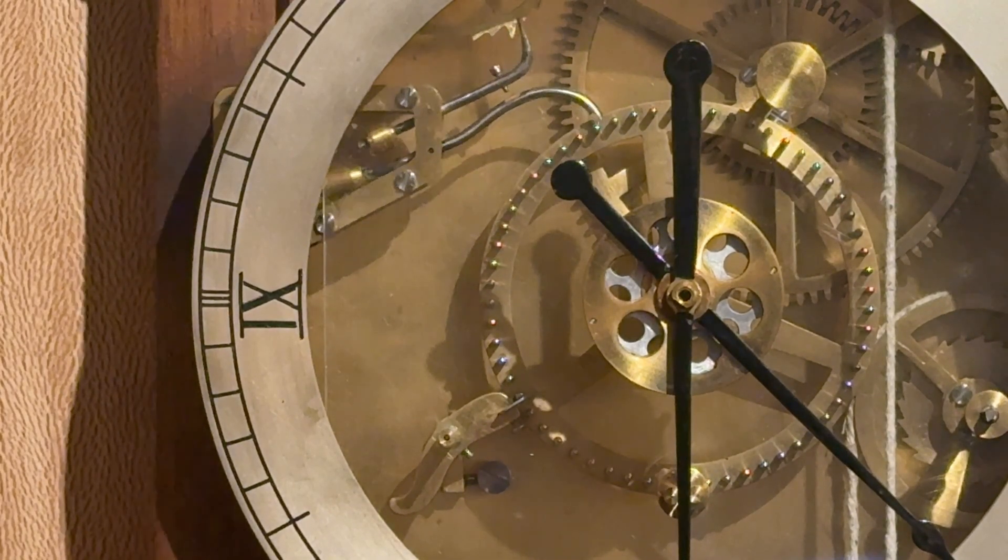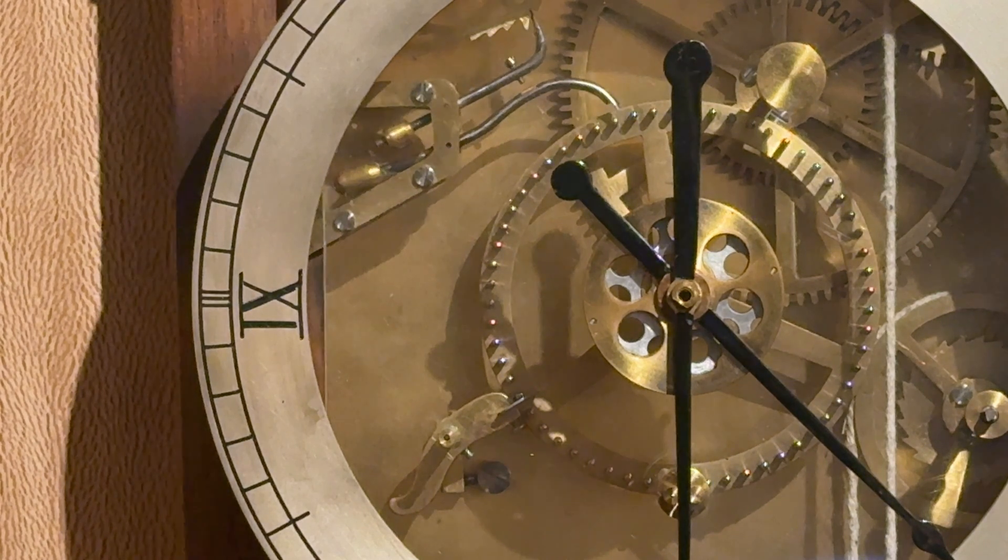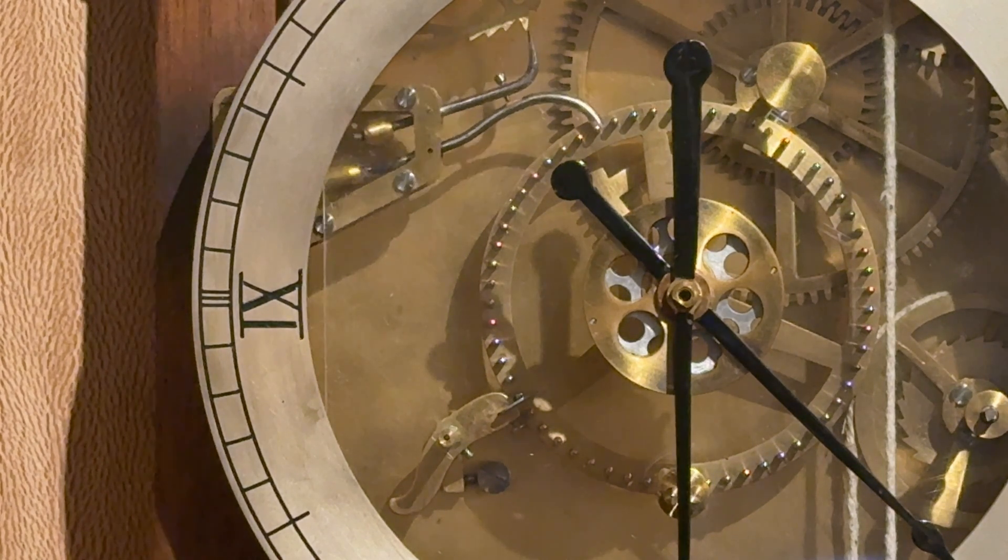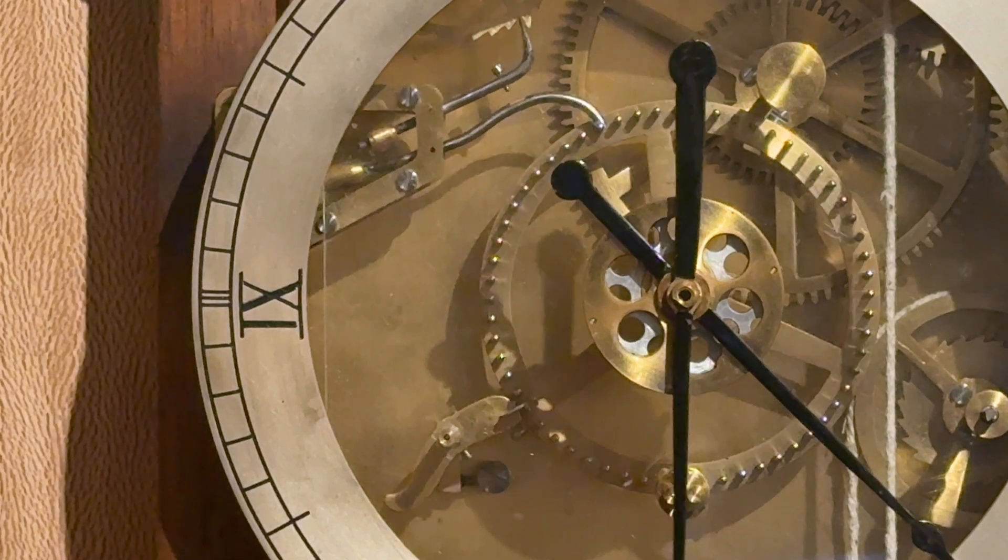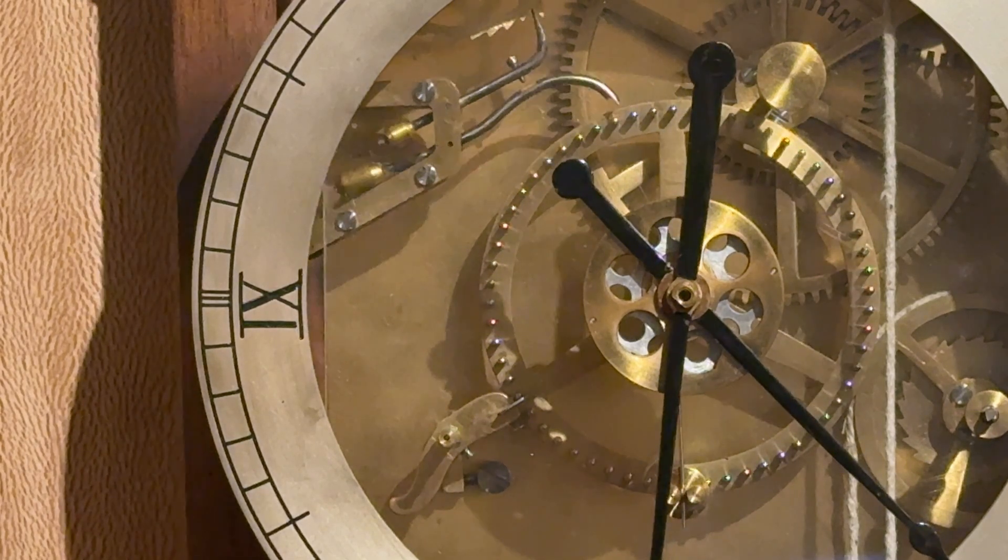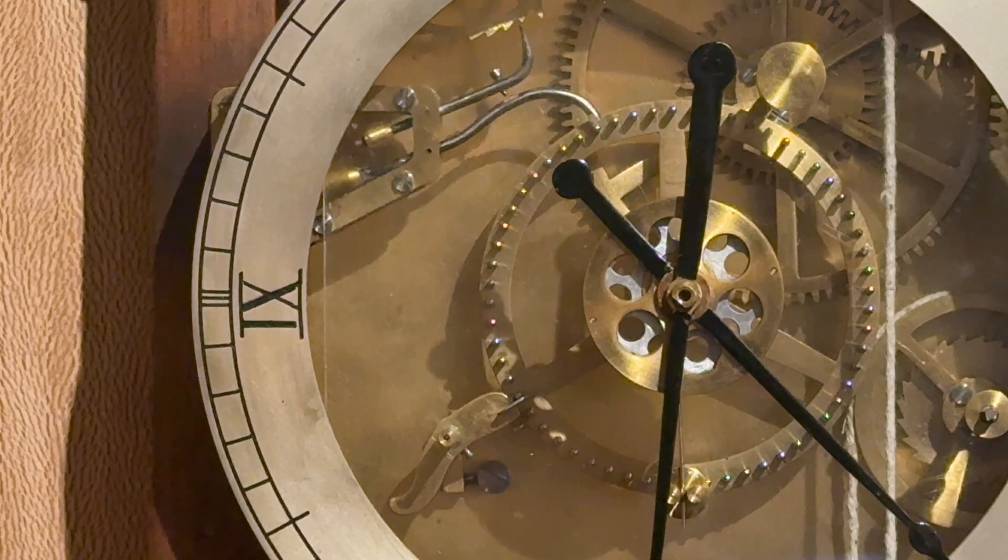So as the pendulum pulled back on the pinwheel, it unlocks the detente. And then when the pendulum moves forward again, the pendulum gets an impulse from the weight and the pinwheel moves on by one tooth.